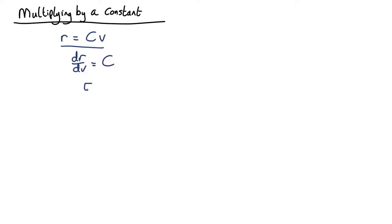So the uncertainty in r equals dr/dv times the uncertainty in v, equals C times the uncertainty in v. So you multiply a variable by some constant, you also multiply the uncertainty by the same constant. Very simple and straightforward.